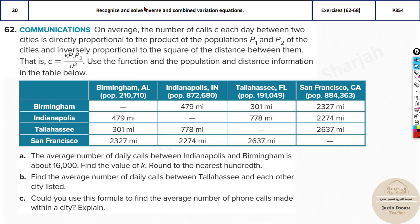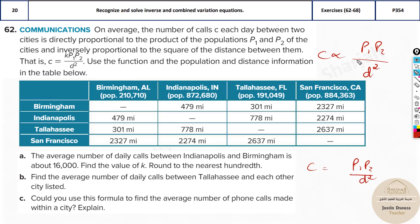Here we have a problem on communications. On average, the number of calls C each day between two cities is directly proportional to the product of the populations P1 and P2, and inversely proportional to the square of the distance between them. So C equals K times P1 times P2 divided by D squared, where K is the constant of proportionality.